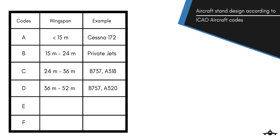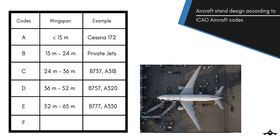Code E aircraft are wide body aircraft having a wingspan of 52m to 65m, such as the Boeing 777. Aircraft stands designated for wide body aircraft engage up to 2 passenger boarding bridges. The use of multiple bridges saves time for airlines to embark or disembark passengers, and a common practice is to use one boarding bridge exclusively for business class passengers and others for economy class.